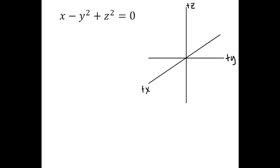For this graph we're going to look at x minus y squared plus z squared equals zero in three dimensions. Before we get started, I want you to make sure that you are ready for a challenge. This is a little bit more difficult surface than some of the other ones we've looked at, so if you haven't mastered some of the easier ones yet, you might wait on this one until you feel a little bit more confident. So if you're ready for the challenge, let's go ahead and jump in.